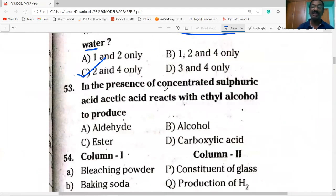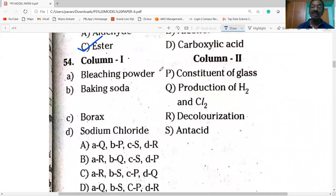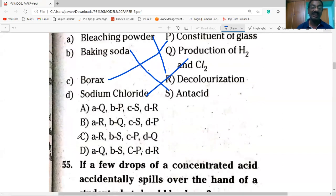Next question. In the presence of concentrated sulfuric acid, acetic acid reacts with ethyl alcohol. Concentrated sulfuric acid acts as a dehydrating agent. It is known as esterification reaction. Then matching: bleaching powder is used for decolorization, baking soda is used as a mild antacid, borax is the constituent of glass, and electrolysis of sodium chloride produces hydrogen, chlorine and also sodium hydroxide is formed. So option C is correct.